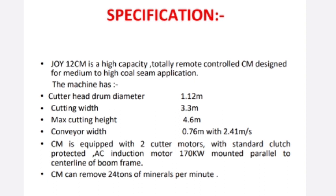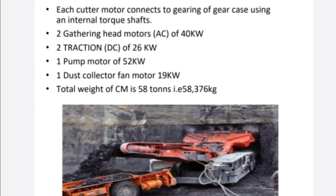The specifications discussed are for the Joy 12CM — a high-capacity, remote-control machine designed for medium and high seam applications. It has a cutting drum diameter of 1.12 meters, cutting width of 3.3 meters, maximum cutting height of 4.6 meters, conveyor width of 0.76 meters, travel speed of 2.41 meters per second, and can cut 24 tons of coal per minute.